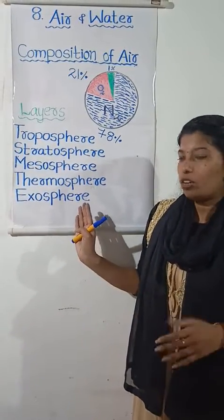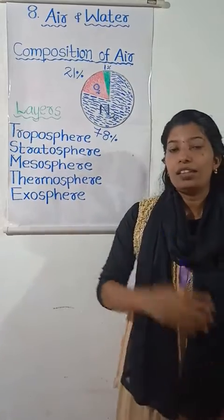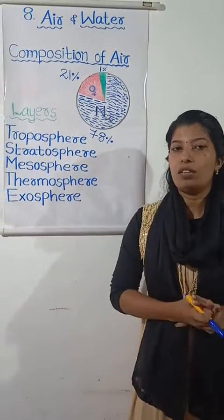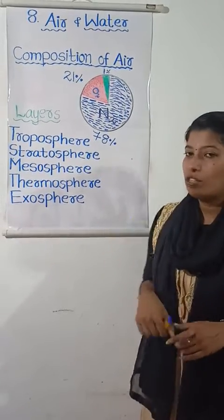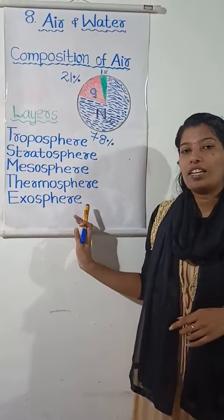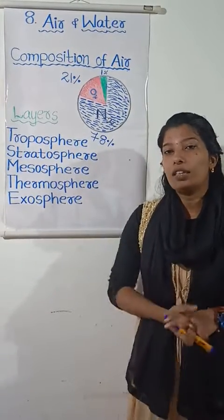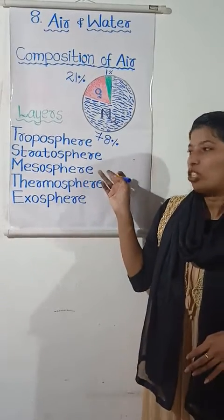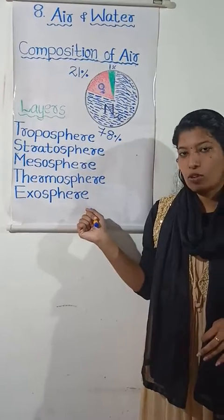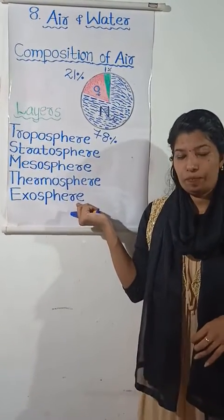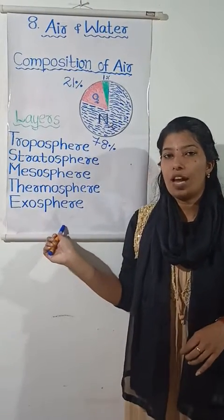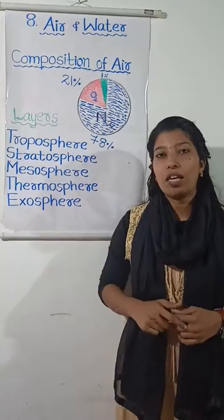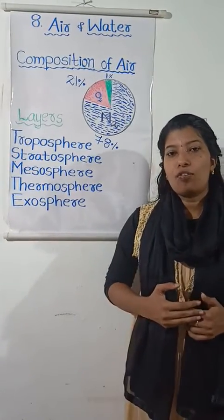The stratosphere protects our earth from ultraviolet rays because the ozone layer is present here. The third layer is the mesosphere — it lies above the stratosphere and is about 50 to 80 km above the earth's surface. The thermosphere is the fourth layer of the atmosphere, extending 90 to 500 km above the earth, and it lies above the mesosphere. The exosphere is the outermost layer of the earth, extending up to thousands of kilometers. A little amount of air is present in this layer and it is very, very high from the earth.